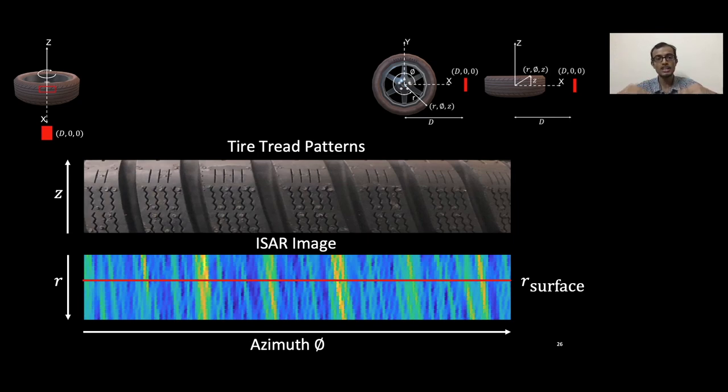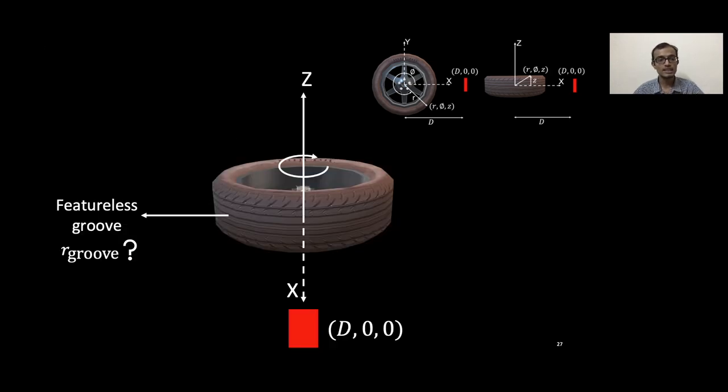In fact, when we search over different radius values, the radius value which corresponds to the maximum correlation with tire tread patterns is the radius corresponding to the surface. So together with some sort of pattern matching and inverse synthetic aperture radar imaging, we identify what the surface's radius is. But unfortunately, the groove doesn't have any such features for us to lock on to. The groove is featureless.